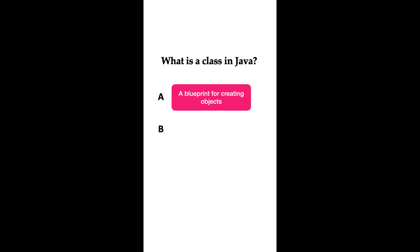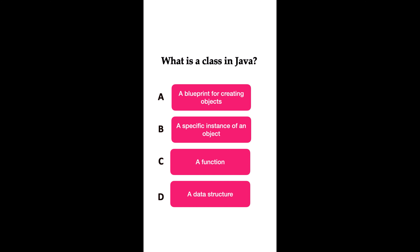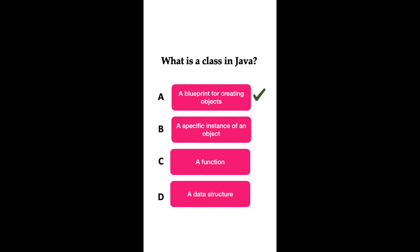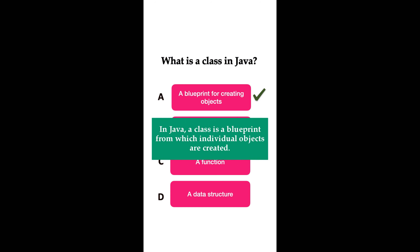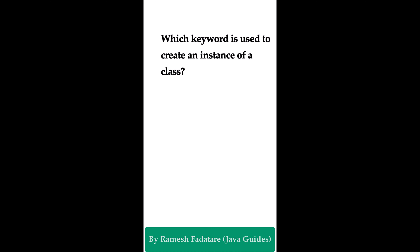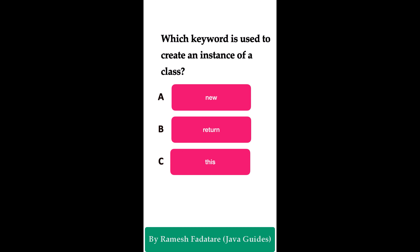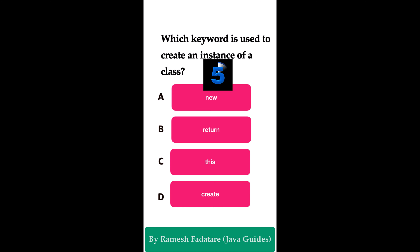What is a class in Java? Option A: a blueprint for creating objects. Option B: a specific instance of a class. Option C: a function. Option D: a data structure. The correct answer is option A — a class is a blueprint for creating objects. In Java, a class is a blueprint or template from which individual objects are created. Which keyword is used to create an instance of a class? Option A: new keyword. Option B: return keyword. Option C: this keyword. Option D: create keyword. The correct answer is the new keyword.